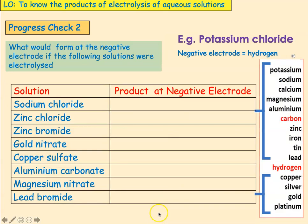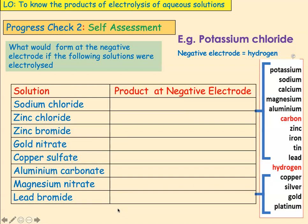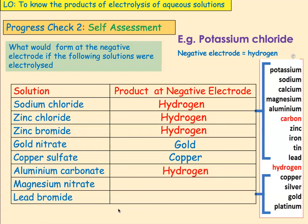Now let's put that knowledge together with the full ionic compound names, looking at whether we get the metal or hydrogen produced at the negative electrode. Self-assessment: sodium chloride — sodium is present, so you form hydrogen. Zinc is above hydrogen, so you form hydrogen. Gold is below hydrogen, so you form gold. Copper is below hydrogen, so you form copper. Aluminium is above, so you form hydrogen. Magnesium is above, so you form hydrogen. Lead is above, so you form hydrogen.